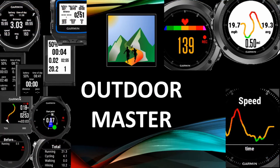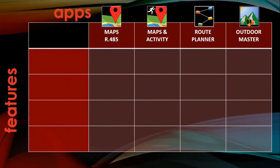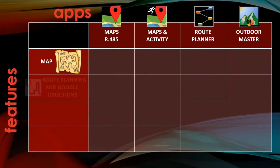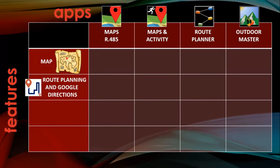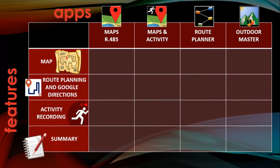We will use a table to compare their features, such as the ability of displaying maps, the support for route planning and for requesting directions online, and the possibility to record an activity. To conclude, we will summarize the strengths and weaknesses of each app.